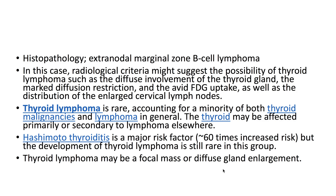Thyroid lymphoma is rare, accounting for a minority of both thyroid malignancies and lymphoma in general. The thyroid may be affected primarily or secondary to lymphoma elsewhere. Hashimoto thyroiditis is a major risk factor, with approximately 60 times an increased risk, though the development of thyroid lymphoma is still rare in this group. Thyroid lymphoma may present as a focal mass or diffuse gland enlargement.